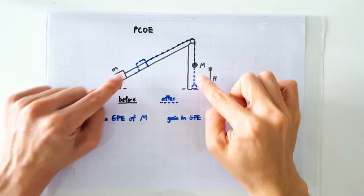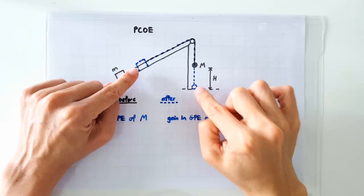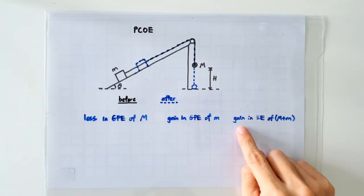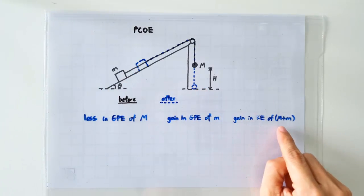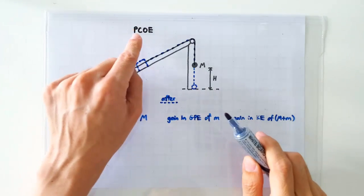Both the masses will be moving at the maximum speed just before the collision, so there's a gain in kinetic energy of big M plus small m.